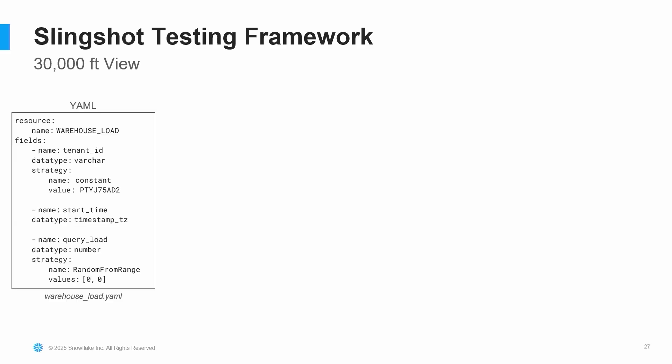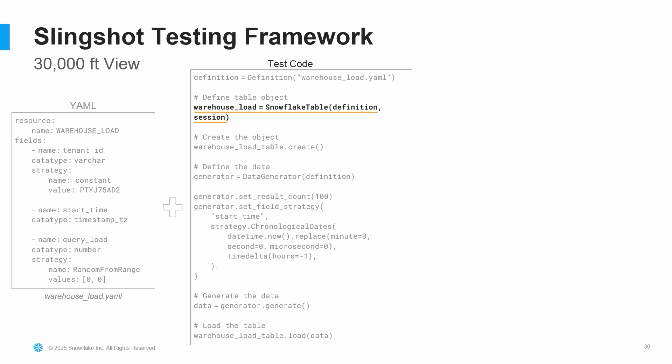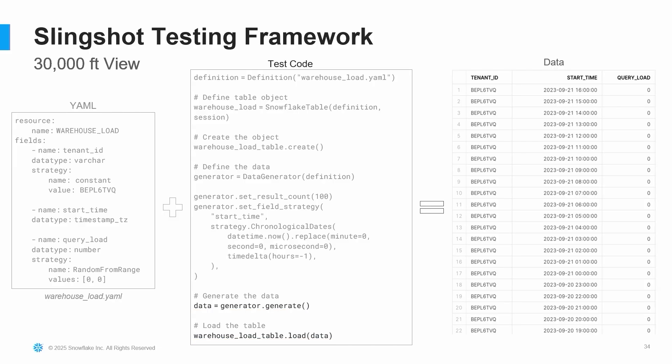So let's talk about the framework itself — the 30,000-foot view. You construct resources via configuration files in YAML. These resources can be anything in Snowflake: tables, streams, tasks, any object. You declaratively define what you want to create. In your test code, you consume this YAML file. The framework exposes a set of interfaces that dynamically generates data for your test. You have a definition class that reads the YAML file, then create the Snowflake object — could be a table, view, or stream class. You use the data generator to create the data, and then generate and load the table. At test time, ephemerally, you have the data you need according to the test cases you're trying to run.